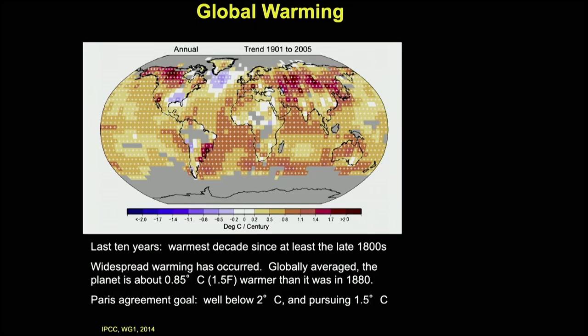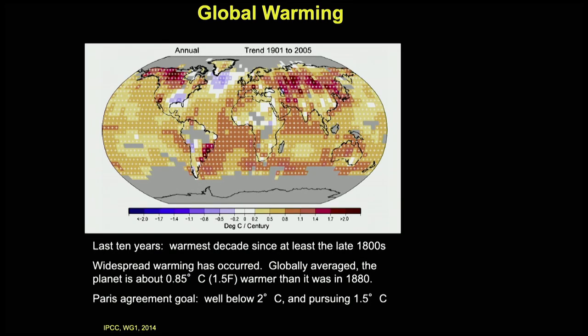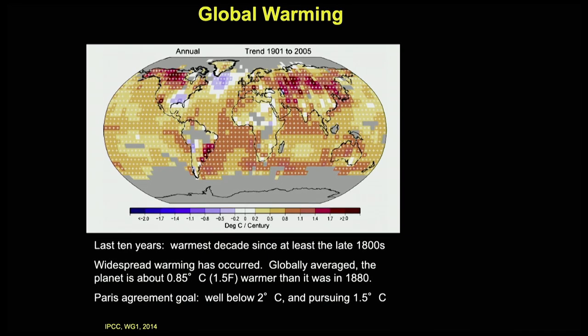It's always incredibly inspiring to me to look at maps of the trends in global temperature over the 20th century and to notice how much of the planet is covered by direct measurements—by thermometers, by ships. What it tells us is that virtually the entire planet is warming. Overall, the planet has gotten about 0.85 degrees Celsius, or about one and a half degrees Fahrenheit, warmer than it was in 1880. The Paris Agreement goal is to keep global mean temperatures from getting above two degrees, and to pursue best efforts to not let it go above one and a half degrees.